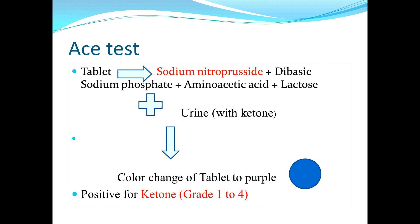So what is the S test? It comes with a tablet, and the tablet contains sodium nitroprusside, dibasic sodium phosphate, aminoacetic acid, and lactose. All together they make the tablet. If you put a drop of urine from a person who is positive for ketones, the color of the tablet changes to purple, which is considered positive for ketone.